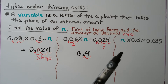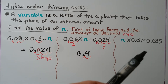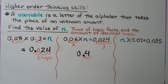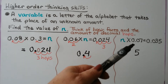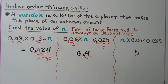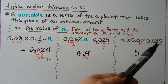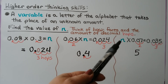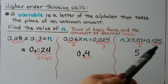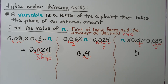For this one, we have some number n times 7 hundredths equals 35 thousandths. We think 7 times some number equals 35 — well, 7 times 5 equals 35. We see that there are 2 decimal place value hops in that factor and 3 decimal place value hops in the product. That means to have 3 in the product, n must have 1 decimal place value hop — 1 plus 2 gives us 3. So n equals 5 tenths.